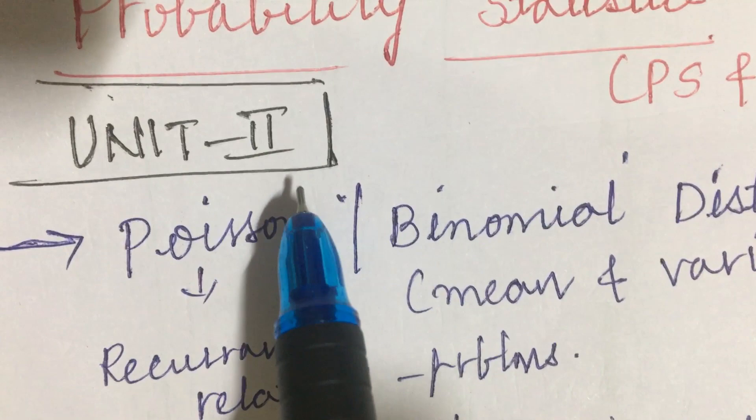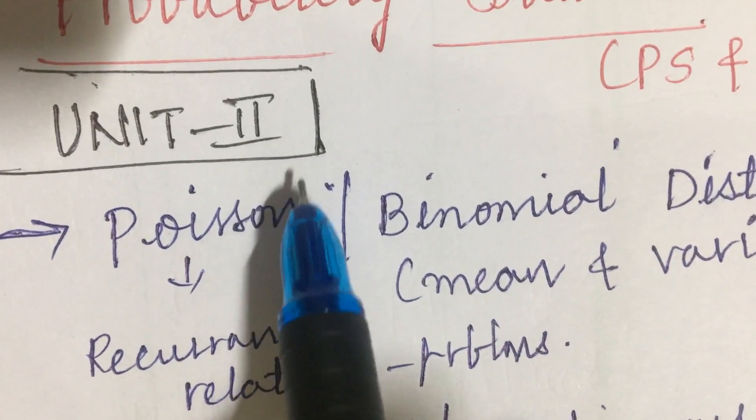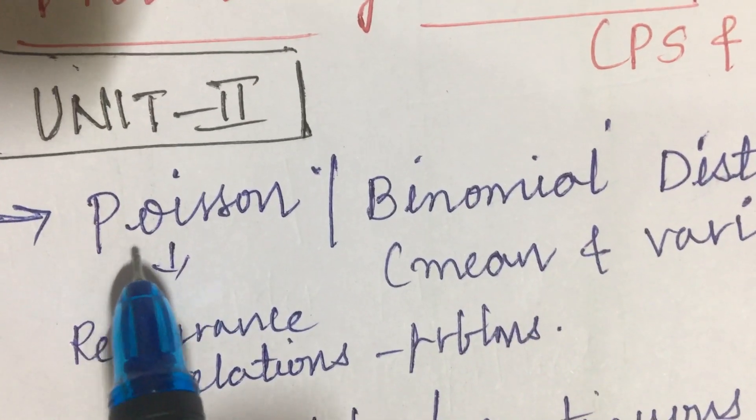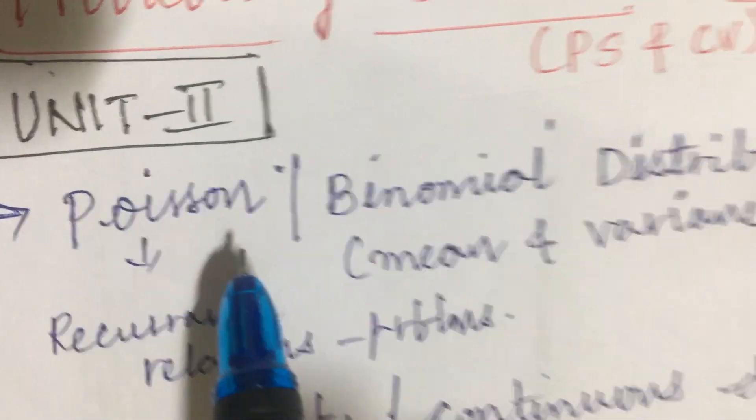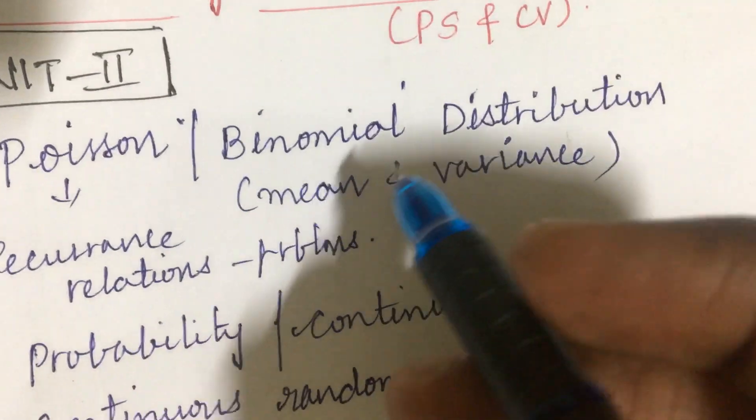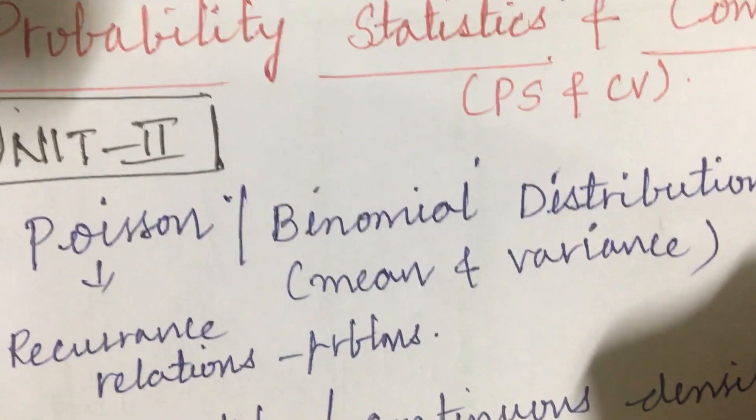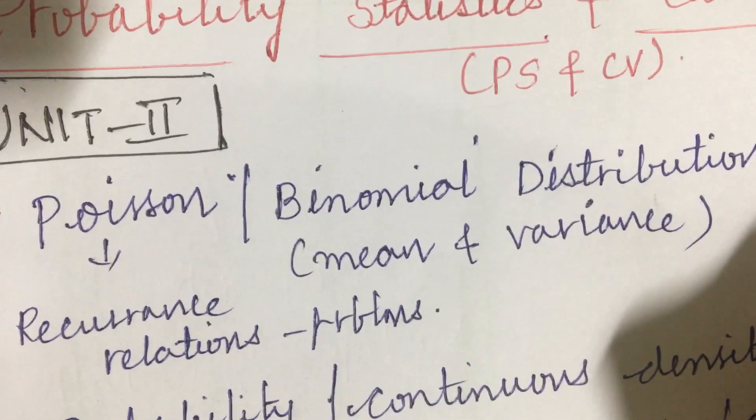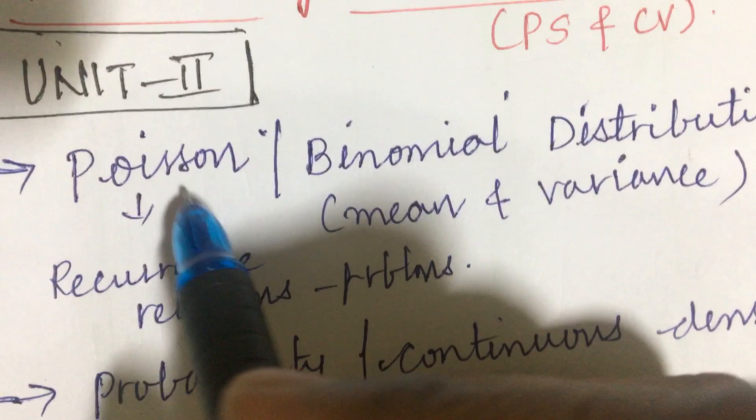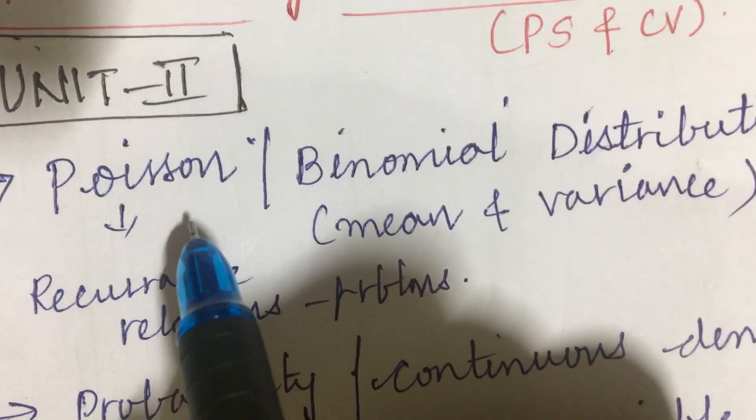The first and foremost unit I would like to cover here is as per the COVID pattern. From this unit we are going to get two questions. The first and foremost gunshot question is all about the Poisson distribution or the binomial distribution, problems, definitions related to the mean and variance. This is a gunshot question and the recurrence relation problems related to the Poisson distribution.